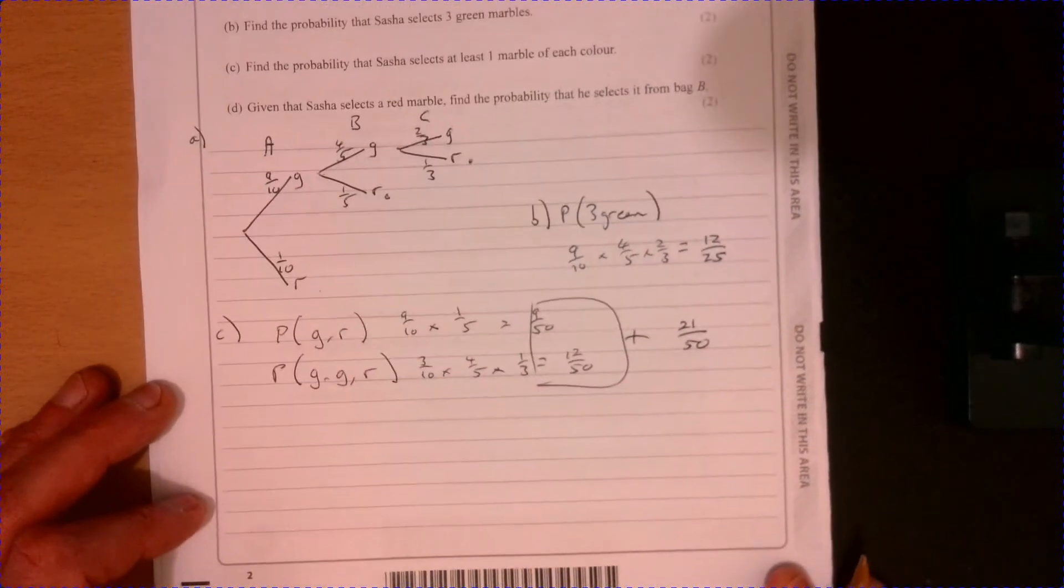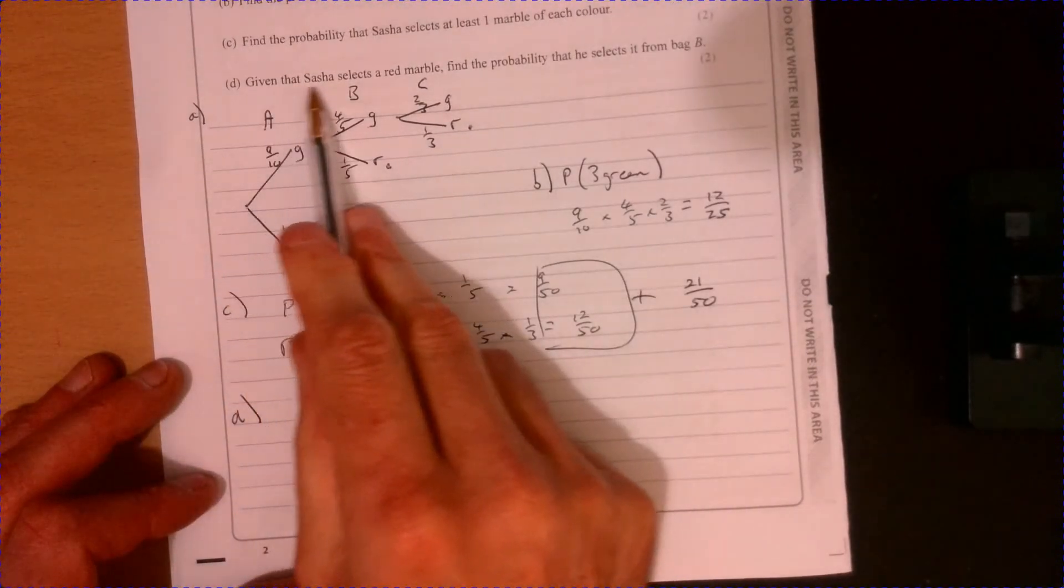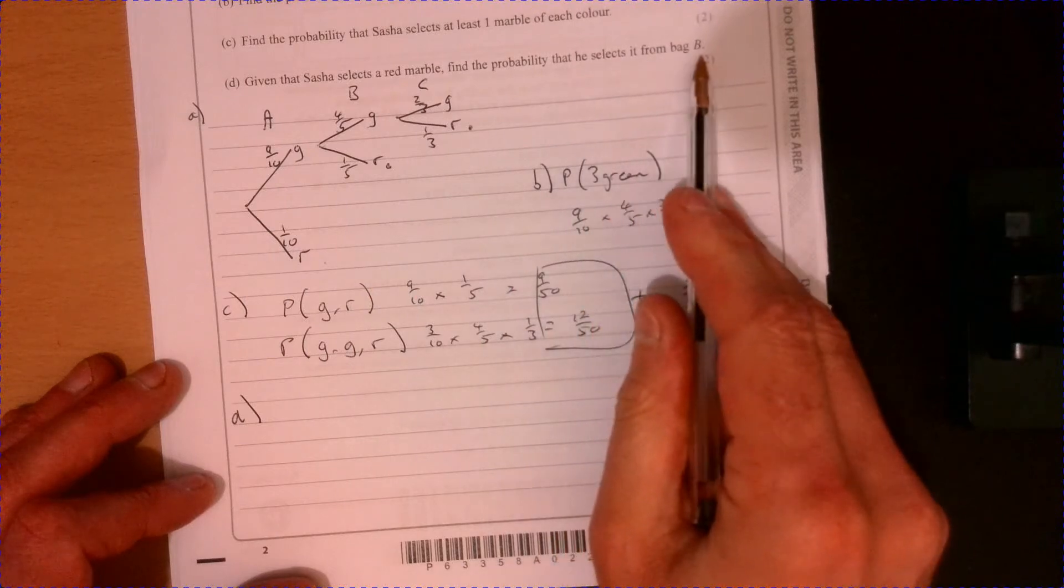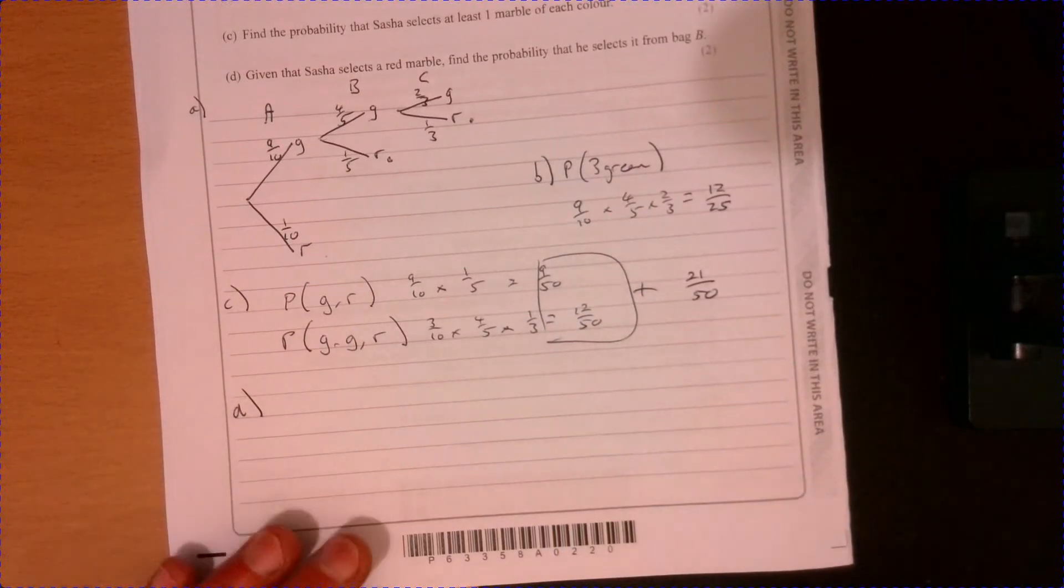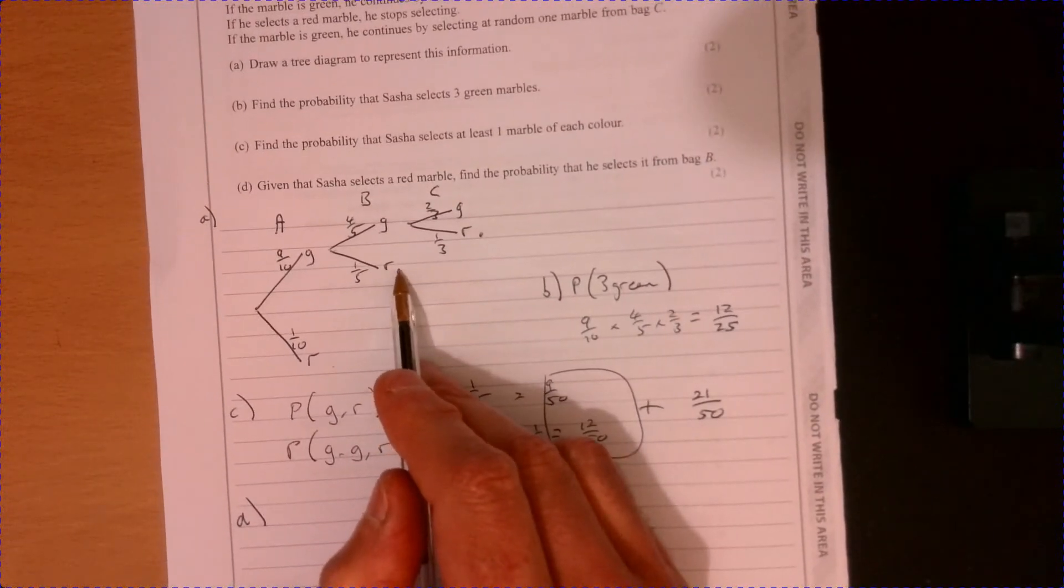Right. Part D. There we are. We're nearly there. Given that Sasha selects a red marble, find the probability that he selects it from bag B. So in other words, we're going to be in here.